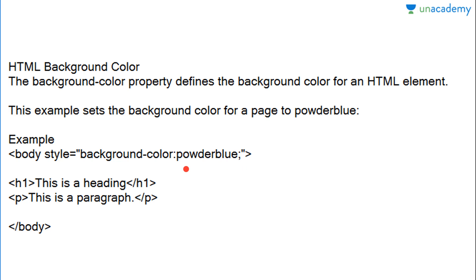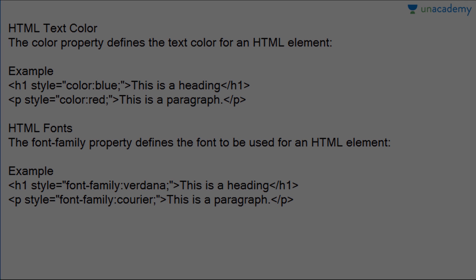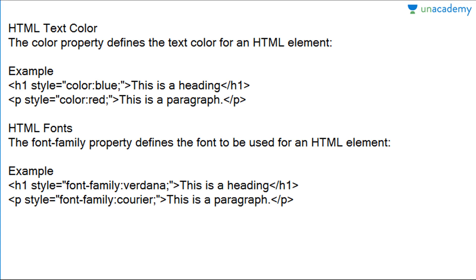Now let's read about text color. The color property defines the text color of an HTML element. You have seen in many websites that two paragraphs are differentiated by writing them in different colors — let's see how we can implement that in our own website using various tags.